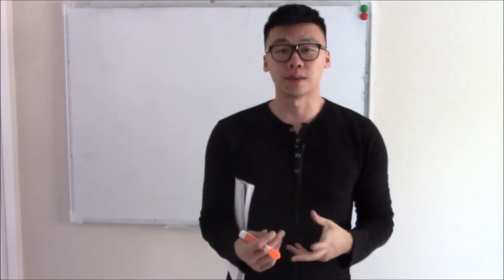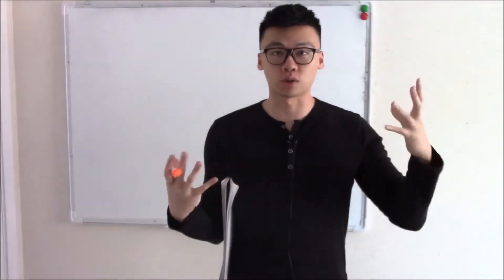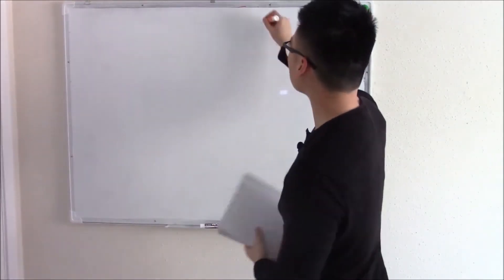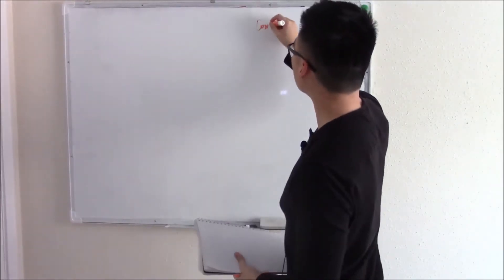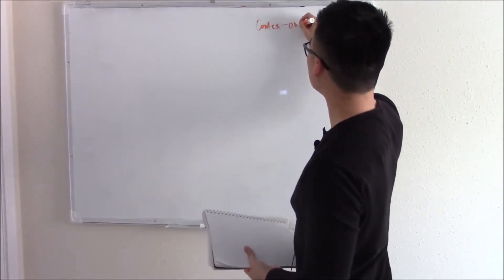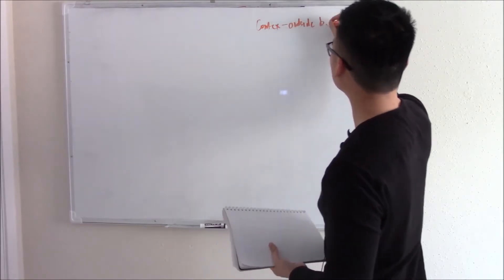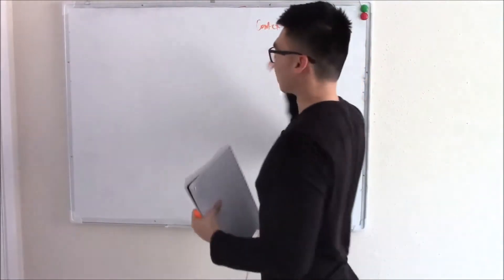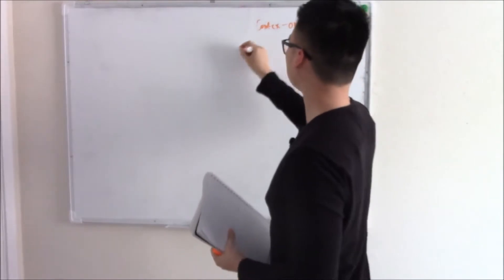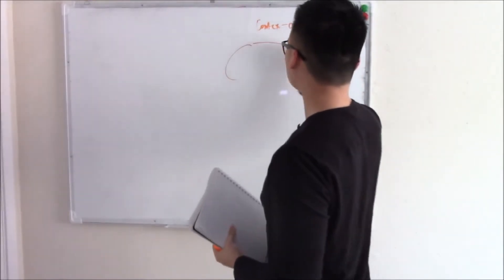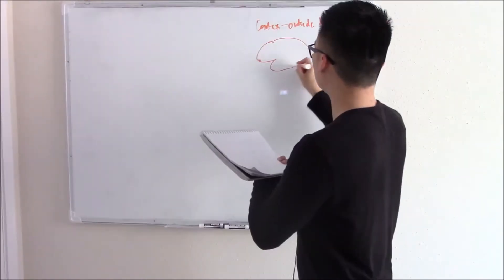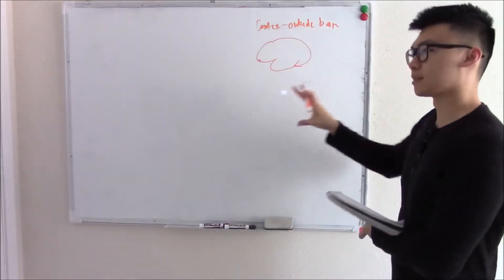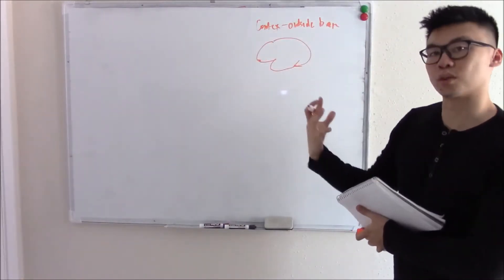Let's jump into some neuroanatomy and start with the cortex — the outside layer of your brain. If you look at the brain from the side, you can see the outside portion, your cortex.